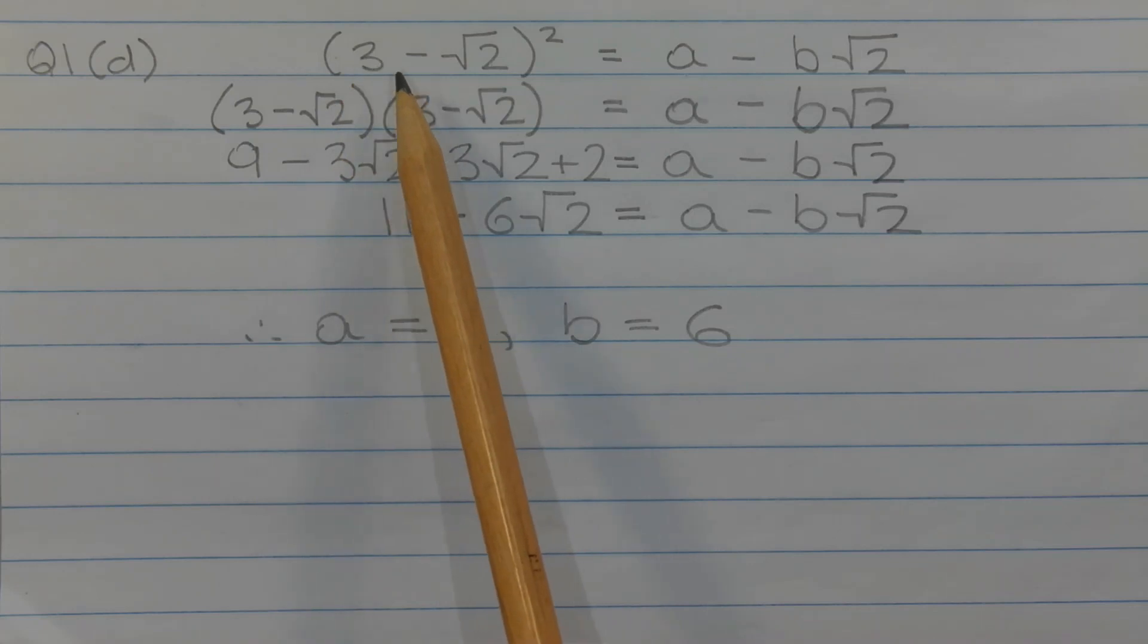Now, 3 minus the square root of 2 in brackets squared can be written as 3 minus root 2 in brackets times 3 minus root 2 in brackets.